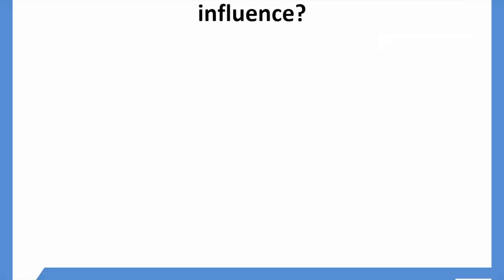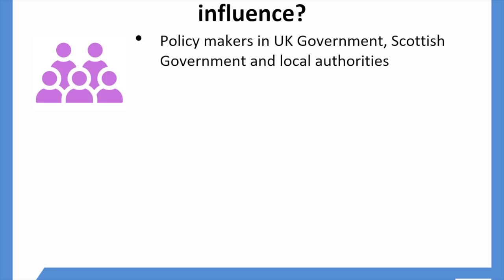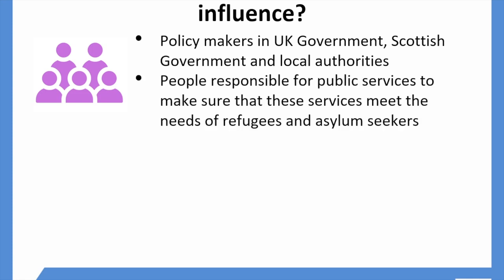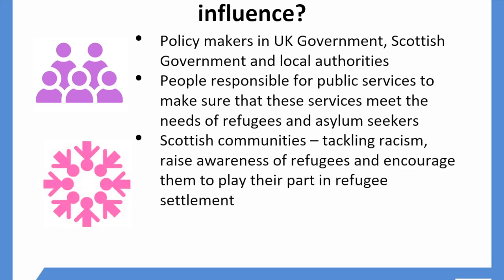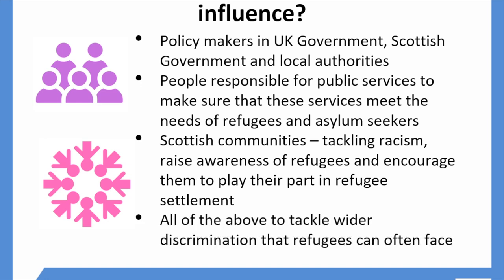There are lots of options in terms of who community organisations can influence, and this will very much depend on the issue or the change that you want to see and who has the power to make that change. It could be policy makers or decision makers in the UK government, Scottish government or local authorities. It could be people who are responsible for running public services — for example, schools or health services — to make sure that these services are meeting the needs of refugees and asylum seekers. Or it could be Scottish communities, particularly around tackling racism, raising awareness of refugees and encouraging them to play their part in welcoming people. It could be all of the above, or a combination, particularly if you're trying to change the wider discrimination that refugees can often face.